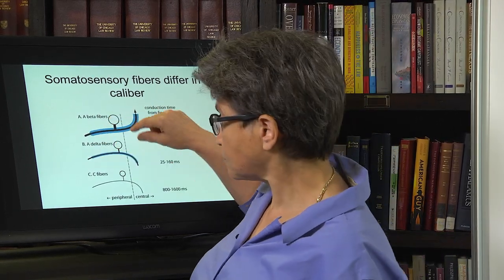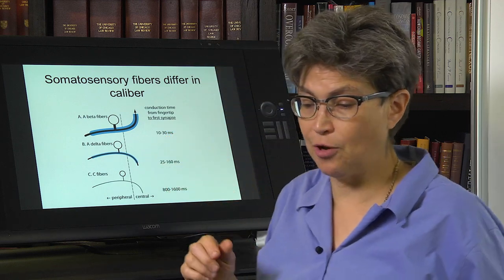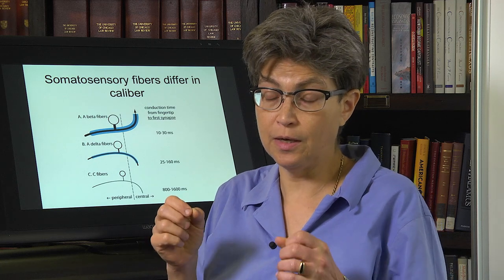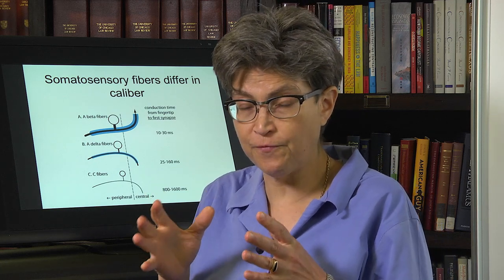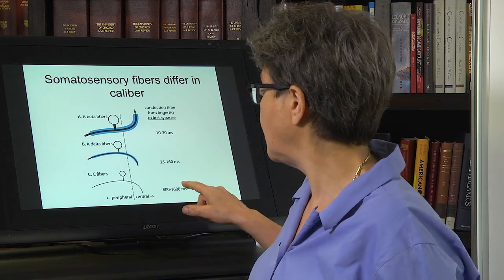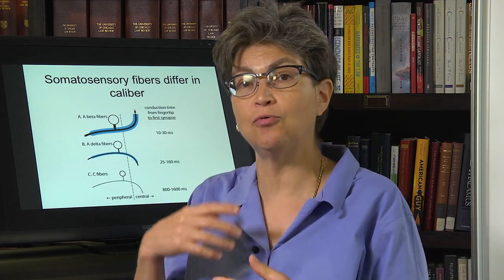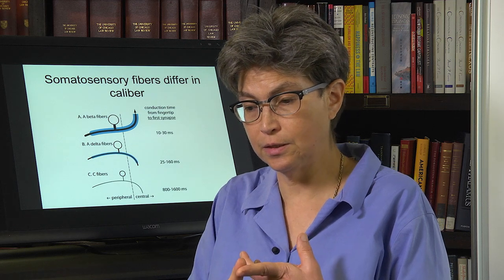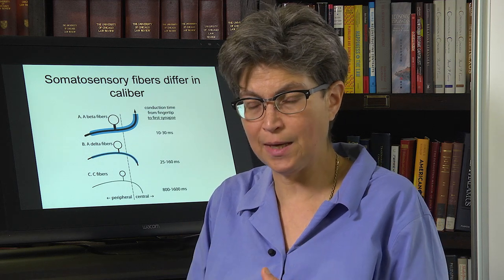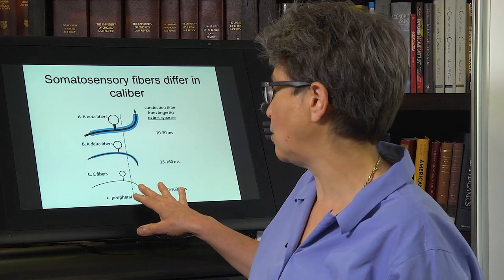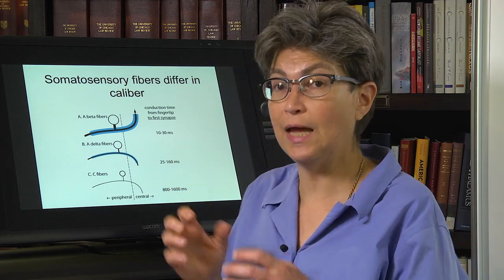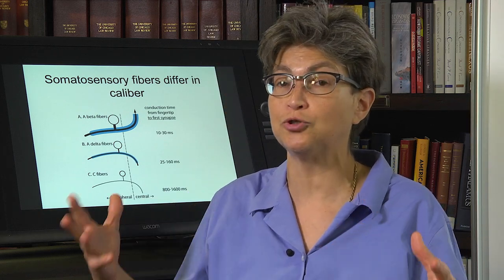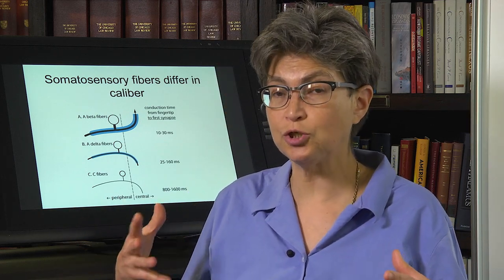A-delta fibers carry information about things such as pinprick — what we call fast pain. C-fibers carry information about duller pain, an ache, information about temperature changes, and also, interestingly enough, about what people are calling pleasurable touch, or sensual touch.